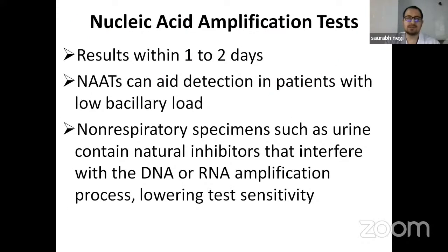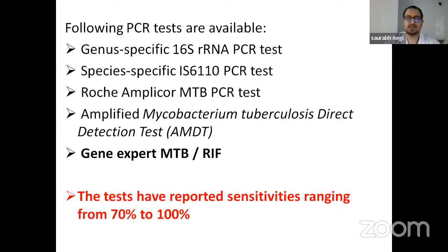Nucleic acid amplification tests (NAAT): results are available within one to two days. NAAT can aid detection of patients with low bacillary load. Non-respiratory specimens like urine have low sensitivity due to natural inhibitors that can interfere with DNA and RNA amplification processes. Various PCR tests are available, including the genus-specific 16S rRNA PCR test, species-specific IS-6110 PCR test, Roche Amplicor MT PCR test, Amplified Mycobacterium Tuberculosis Direct Detection Test, and most recently GeneXpert, which also detects rifampicin resistance and acts as a surrogate for MDR-TB. These tests have reported sensitivity ranging from 72 to 100%.